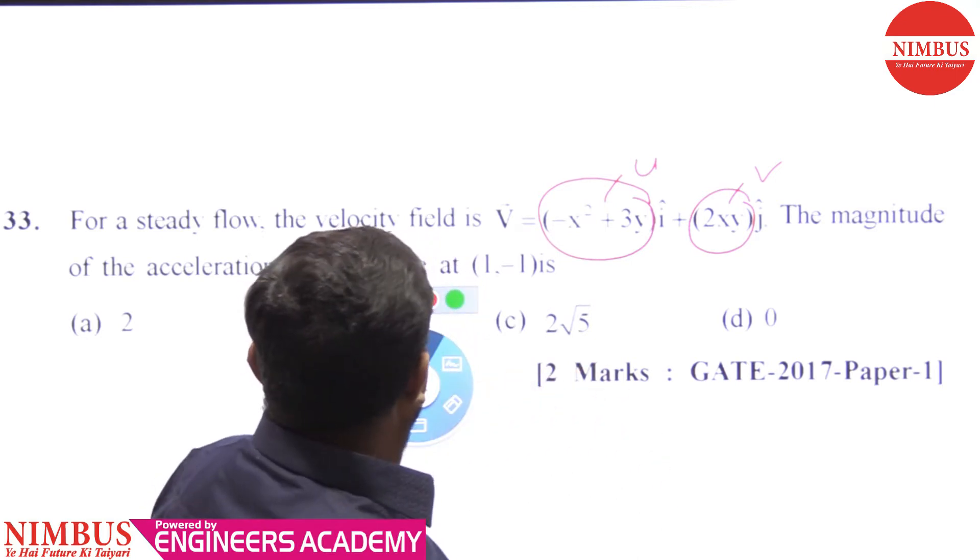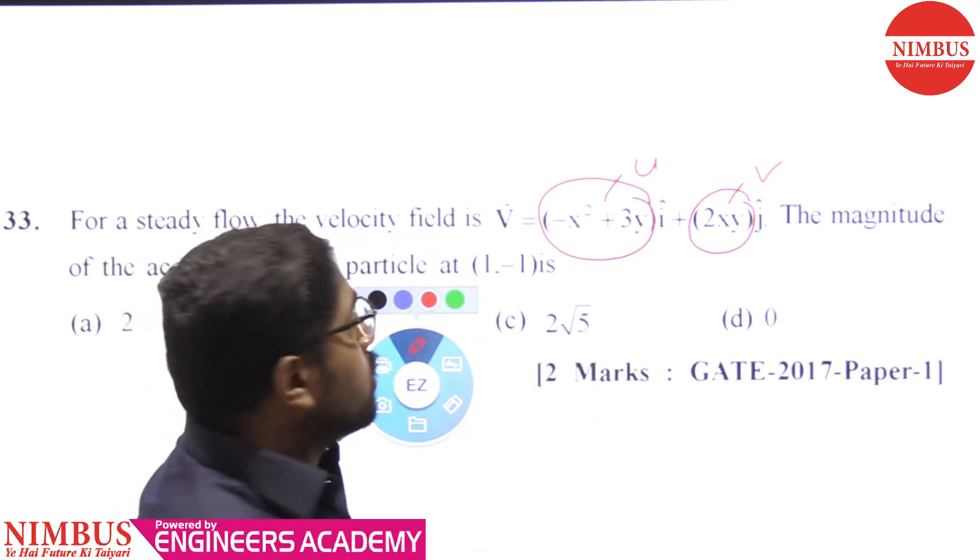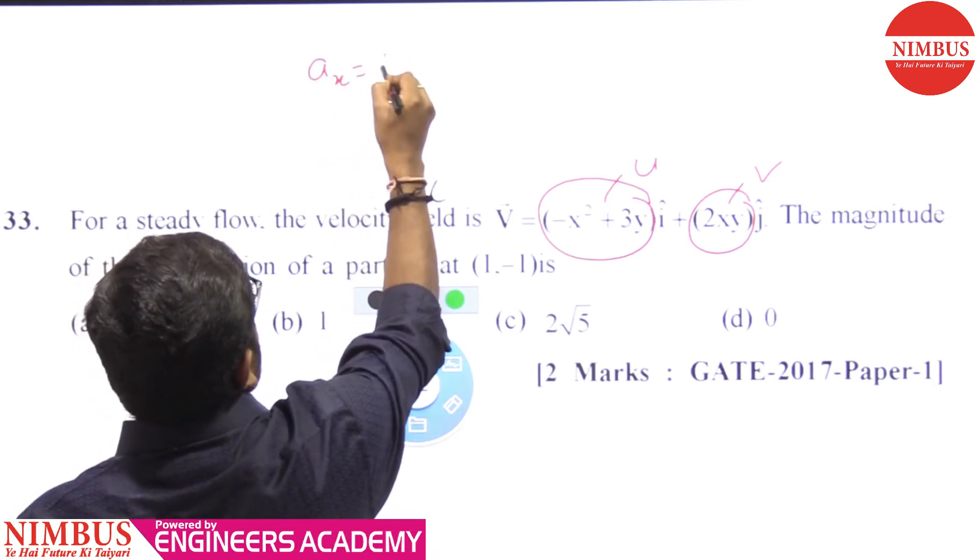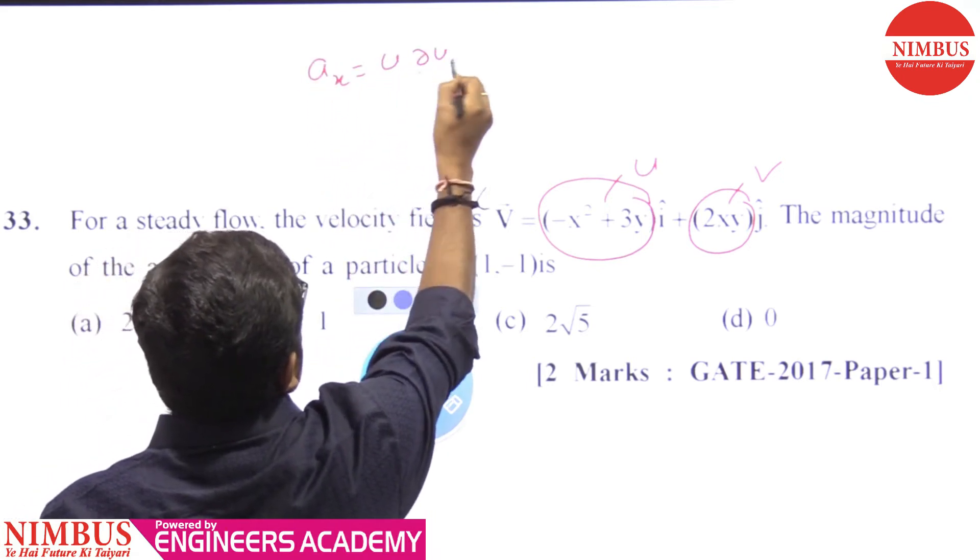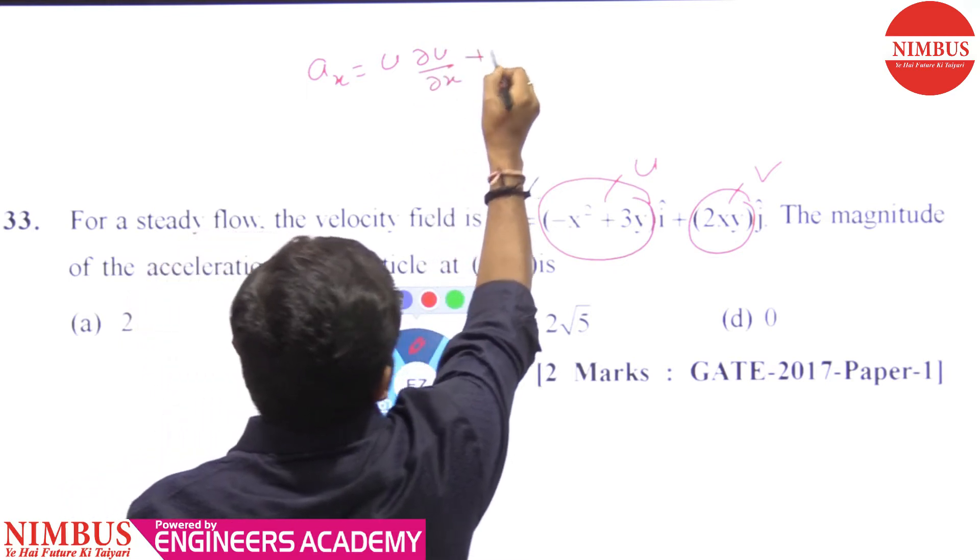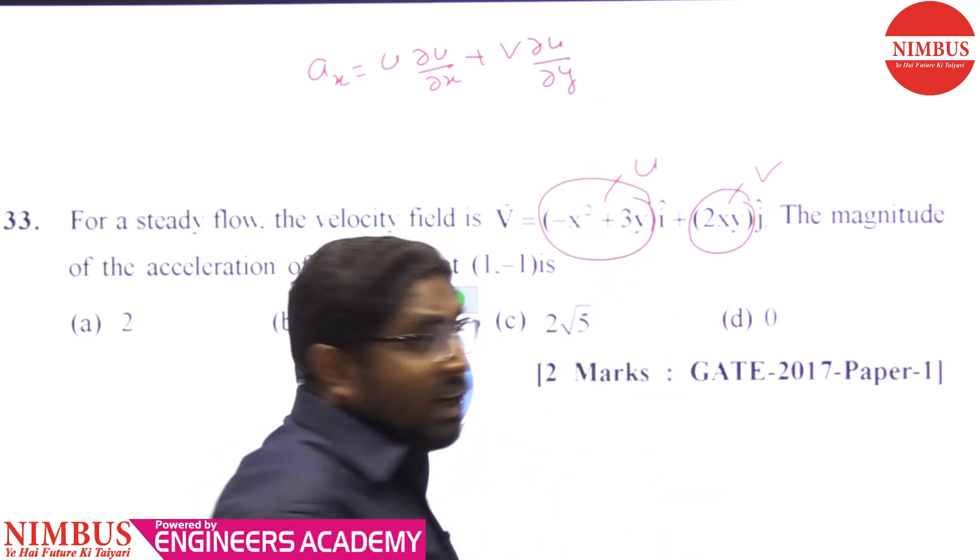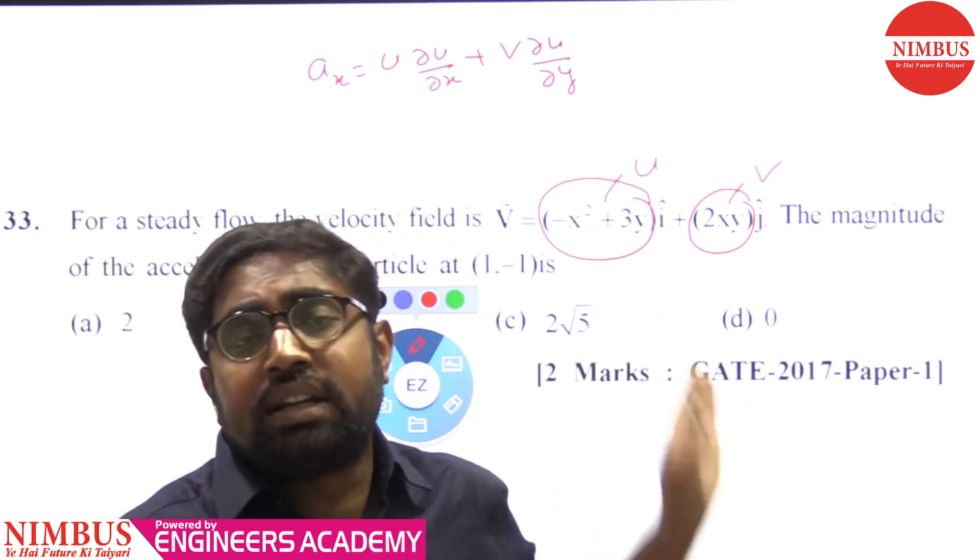If we talk about AX, then AX is equal to U·∂U/∂X plus V·∂U/∂Y. You don't have to do ∂U/∂T because there is no T term.